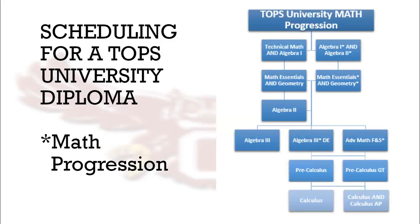The TOPS University math progression is as follows. Students taking Algebra 1 Part 1 in the 8th grade then come to Shelmont High School taking Algebra 1 and Algebra 2. Those students who did not take Algebra 1 Part 1 in the 8th grade typically take Technical Math and Algebra 1.